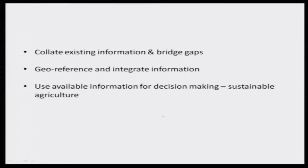What we need to do is collate information and bridge the gap between one activity and another, then georeference it. Nowadays, georeferencing is the only way of addressing particular information because physical identification or reference stones which separated one field from the other have all been removed or taken away. So identification of this type of information is very difficult, and we may have to go back to georeferencing — that is, lat-lon identification which you can get even on your mobile — and integrate that information.